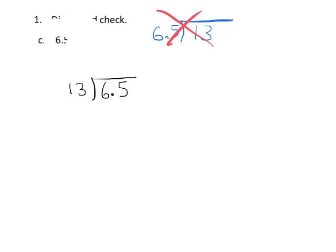So this is going to be 6.5 goes here and the 13 goes here, and we're going to use estimation to figure out how many times does 13 go into what I'm going to think of as 65 tenths, because 13 does not go into 6. So I'm going to go to the next decimal place over and think of this as 65 tenths.